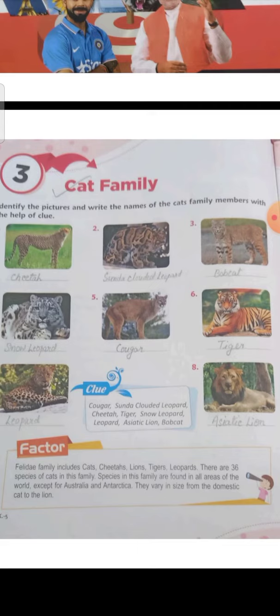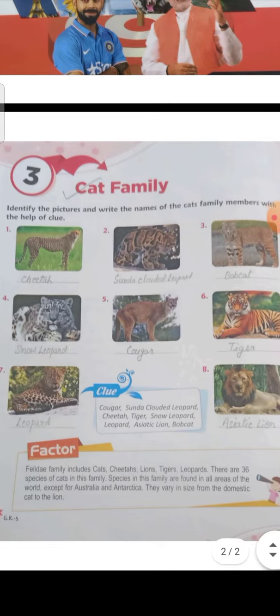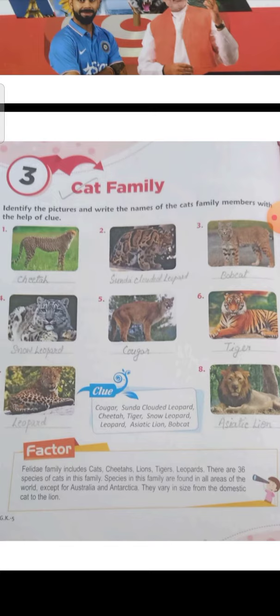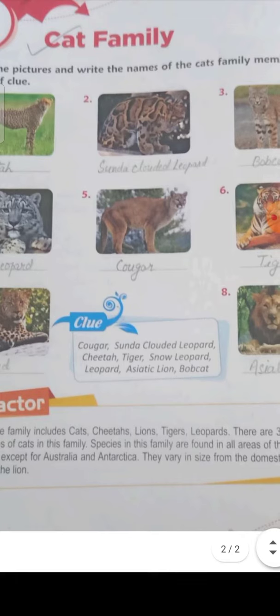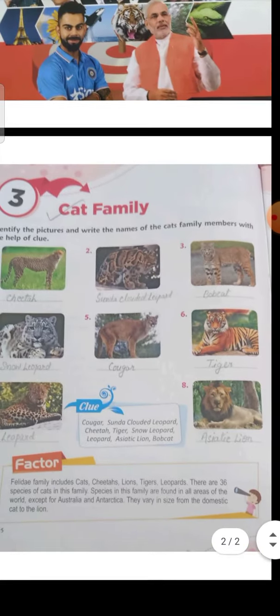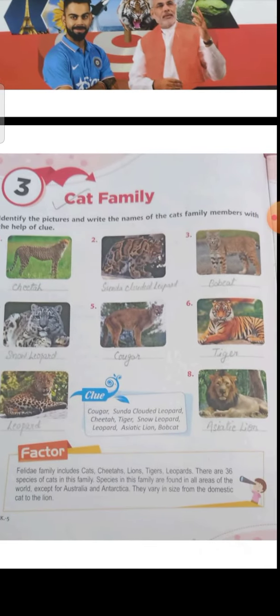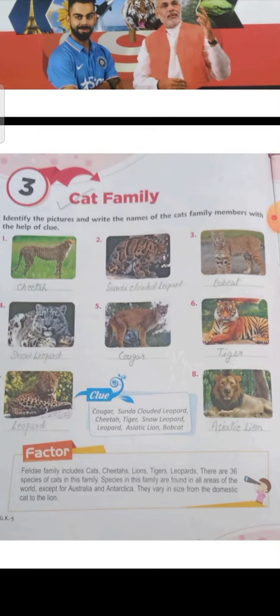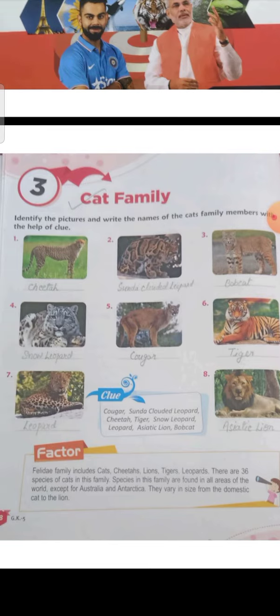Cat family means 'billi ka parivar' — which members belong to the cat family. Here are some pictures. Identify the pictures and write the names of the cat family members with the help of the clue box. Look at the pictures, identify which cat family member it is, and fill in the names from the clue box.